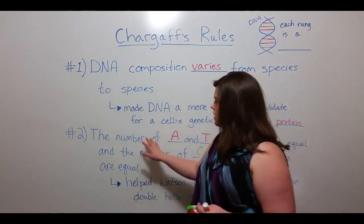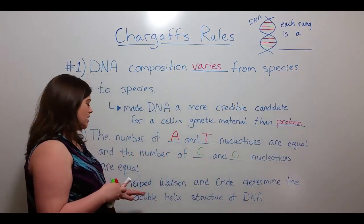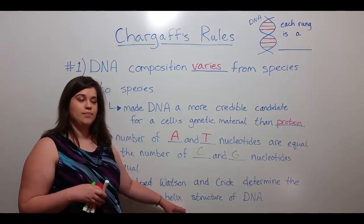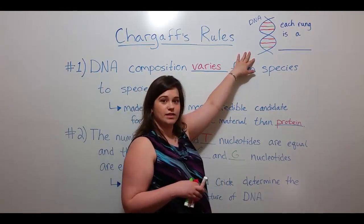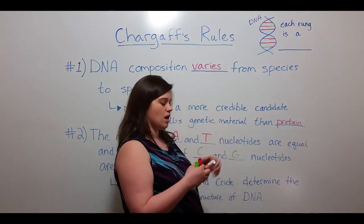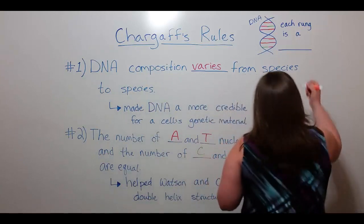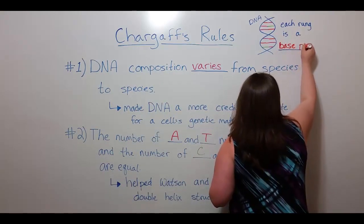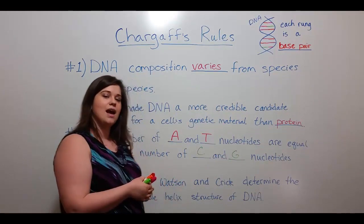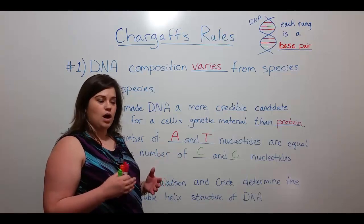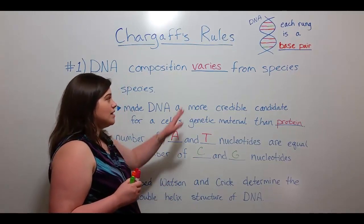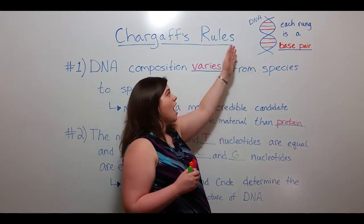Why is this important? Well, rule number two was instrumental in helping Watson and Crick determine the double helix structure of DNA. If we look at a basic model of this double helix structure, we see that it looks almost like a ladder with rungs. Each rung is what we now call a base pair, and each base pair is made up of two nucleotides — either adenine and thymine, connected by hydrogen bonds, or cytosine and guanine, also connected by hydrogen bonds. You can see how in this model, for every adenine there's a thymine, and for every cytosine there's a guanine.